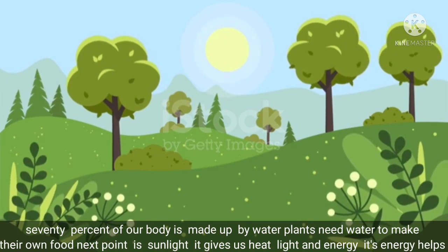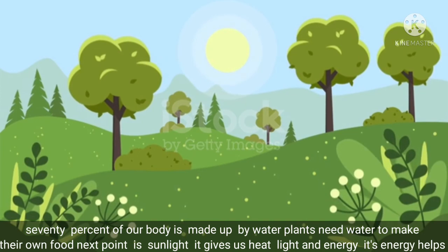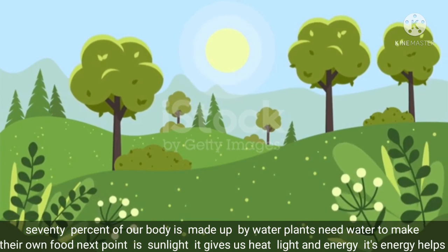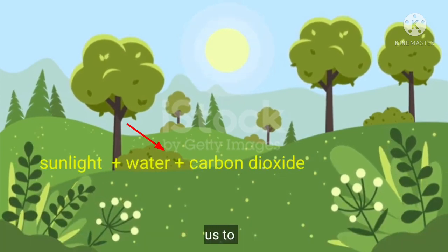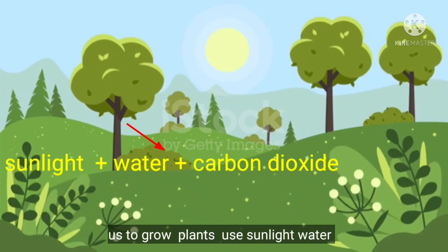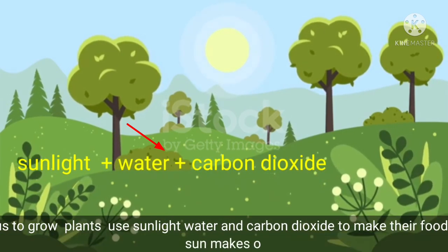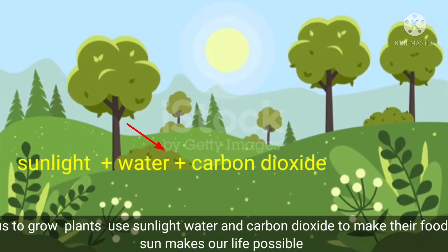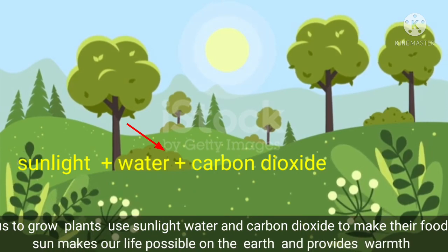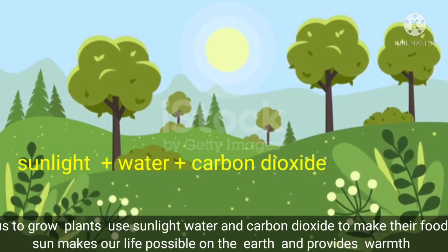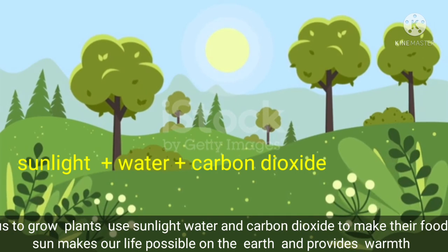Plants need water to make their own food. Next point is sunlight. It gives us heat, light and energy. Its energy helps us to grow. Plants use sunlight, water and carbon dioxide to make their food. The sun makes our life possible on the earth and provides warmth.